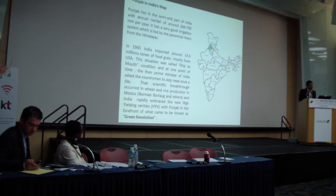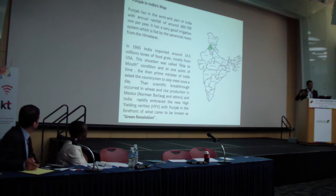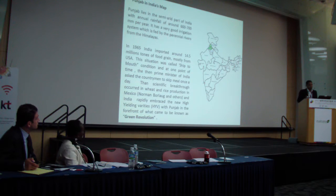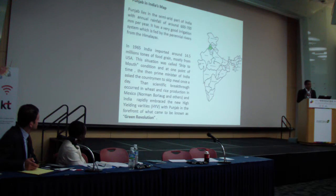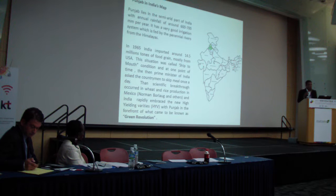In 1965, India was importing almost 15 million tons of food grain, mainly from America. India used to be called a 'ship-to-mouth economy' — meaning when a shipment arrived, Indians could eat. At one point, our Prime Minister asked people to skip a meal a day because there wasn't enough food. Punjab took up the burden of producing more food. Now we are self-sufficient in all kinds of food, but the question is what effect this has had on ecological degradation in terms of water and other services.